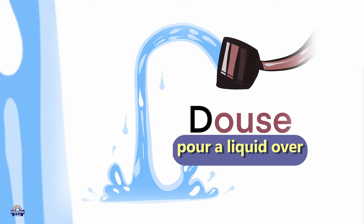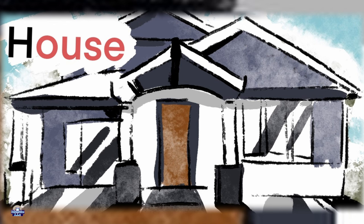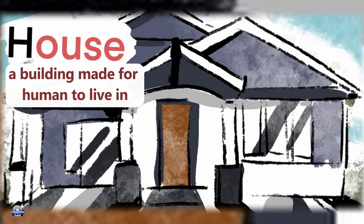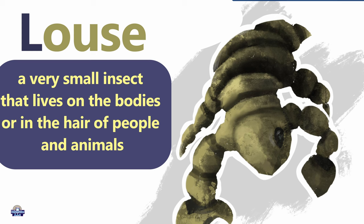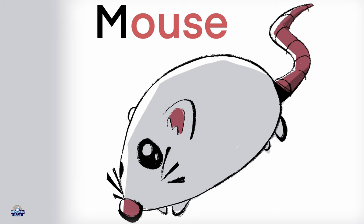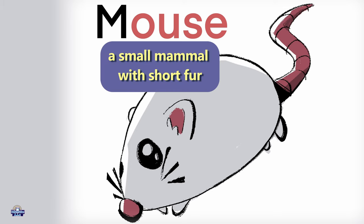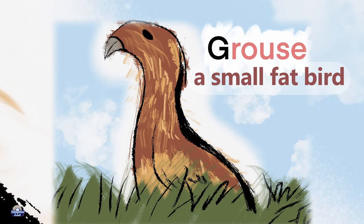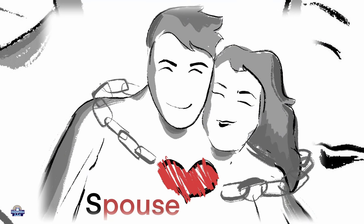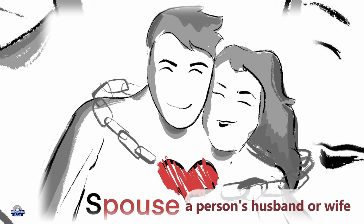Please remember that the meanings in this video are not limited to the meanings of these words. Douse: pour a liquid over. House: a building made for humans to live in. Louse: a very small insect that lives on the bodies or in the hair of people and animals. Mouse: a small mammal with short fur. Grouse: a small fat bird. Spouse: a person's husband or wife.